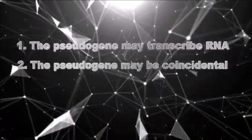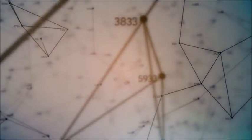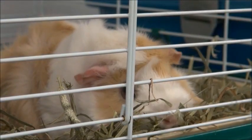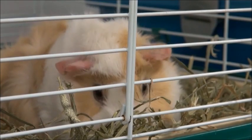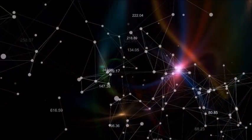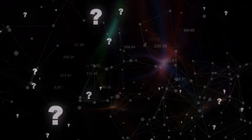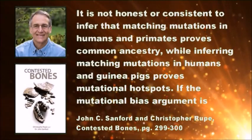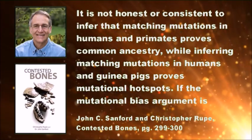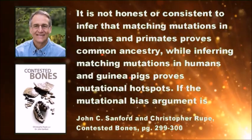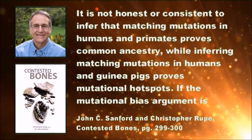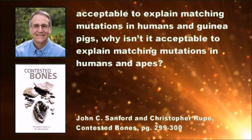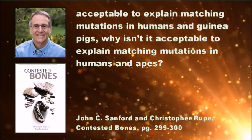Second, it is entirely possible that this trait is shared between chimps and humans as a matter of sheer coincidence. Consider that guinea pigs also possess a vitamin C pseudogene that does not synthesize vitamin C. Guinea pigs are not thought to be very closely related to either humans or chimps, yet they also share this trait. Evolutionists conclude that this is a mere coincidence that the gene broke in the guinea pig. Fair enough. But if it can be a coincidence that guinea pigs share this in common with chimps, why can't it be a coincidence that humans do as well? John Sanford and Christopher Rupe comment on this: It is not honest or consistent to infer that matching mutations in humans and primates proves common ancestry, while inferring matching mutations in humans and guinea pigs proves mutational hotspots. If the mutational bias argument is acceptable to explain matching mutations in humans and guinea pigs, why isn't it acceptable to explain matching mutations in humans and apes?